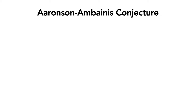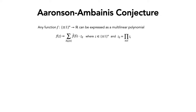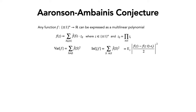To introduce this conjecture, let me give some basic notation. Any function on the hypercube can be written as a multilinear polynomial in n bits, with Fourier coefficients indexed by subsets of n. Two important quantities: the variance of this polynomial on the hypercube, given by the sum of squares of all non-empty Fourier coefficients; and the influence of the i-th bit, given by the sum of squares of all coefficients where i is included in the set — equivalently, the expected squared i-th derivative.